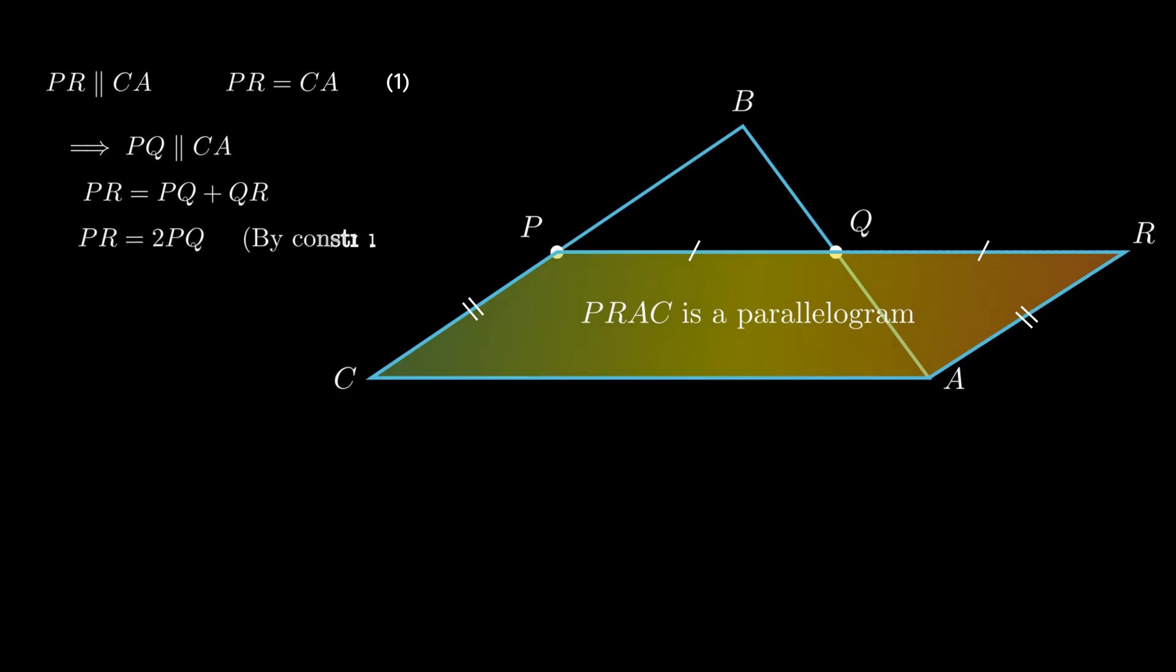By substituting the value of PR as twice of PQ in equation number 1, we get 2PQ is equal to segment CA.